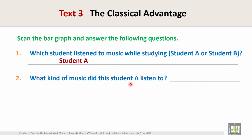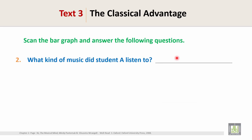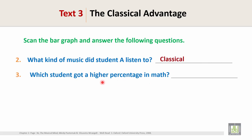Question 2: What kind of music did Student A listen to? Find the answer in the bar graph information given. Student A listened to classical music. So the answer is classical music.